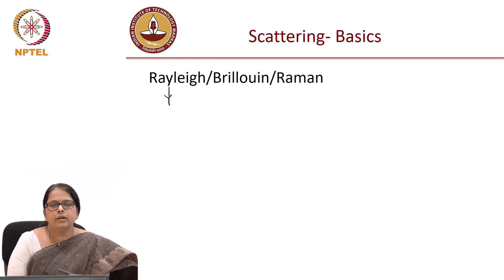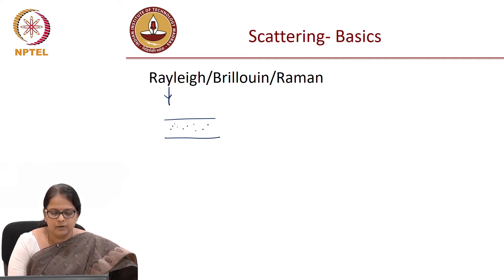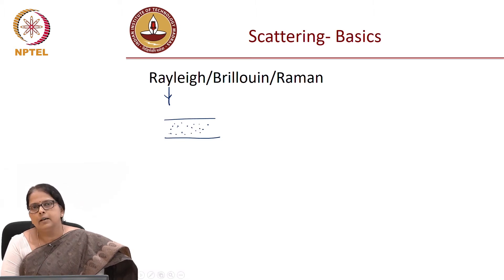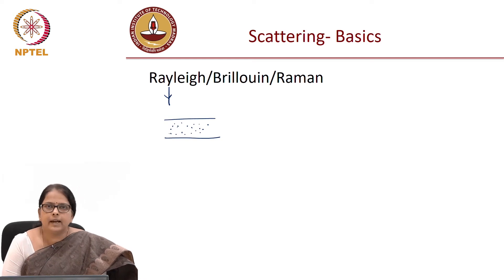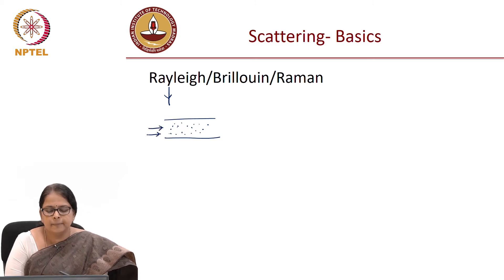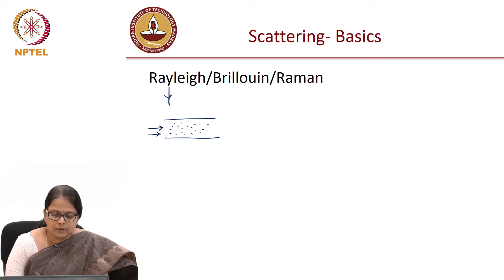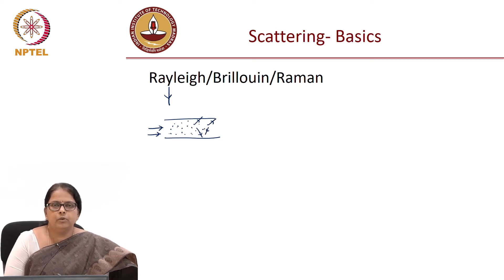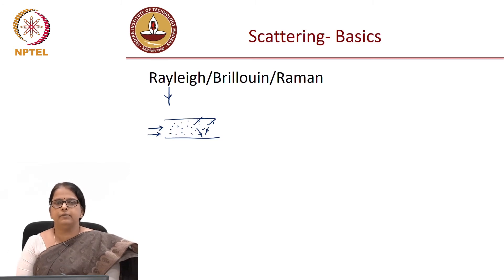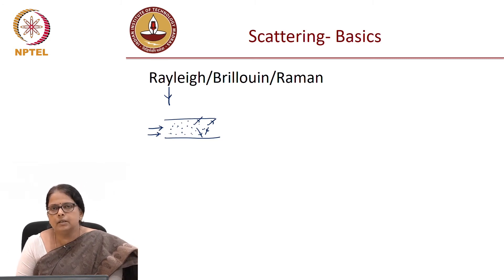The Rayleigh scattering we have already seen before. This is primarily because of the inhomogeneities in the fiber fabrication. What I am marking here is the core of the fiber and some inhomogeneities or discrete scatterers along the length of the fiber. So when light is incident in the fiber, these particles or inhomogeneities pose as scattering centers and light gets scattered in different directions. In a single mode fiber, we know that there are only two possible ray paths.